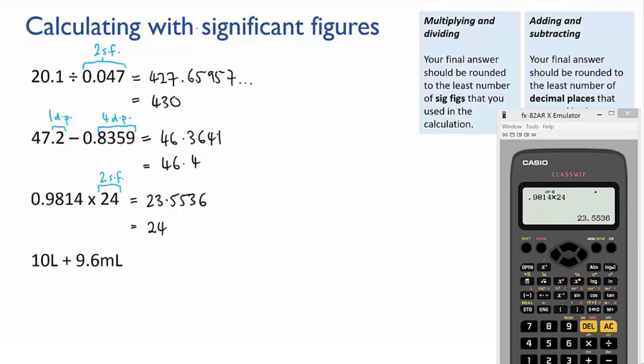All right, lastly we've got 10 litres plus 9.6 millilitres. Think about a full 10 litre bucket and a 10 mil measuring cylinder with 9.6 mils of water in it. Well we can't just add 10 litres to 9.6 mils. Why not? Well the units are different. We need to convert one of those values so that both of them have the same unit.